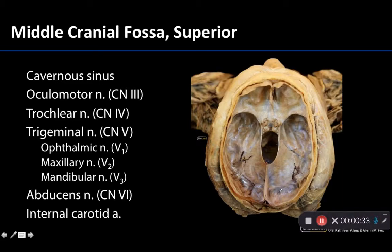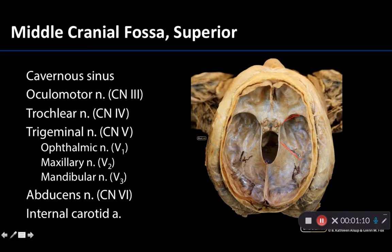Anytime you see blue, particularly if you have dura still associated with it — because you need that dura to house the blood in the dural venous sinus — you know you're probably looking at a dural venous sinus. You have a transverse sinus here and a bit of a straight sinus here. To locate the cavernous sinus in a donor that still has dura, look for any blue between where the superior orbital fissures would be and the apex of the petrous portion of the temporal bone. Any blue in this region is going to be part of the cavernous sinus.